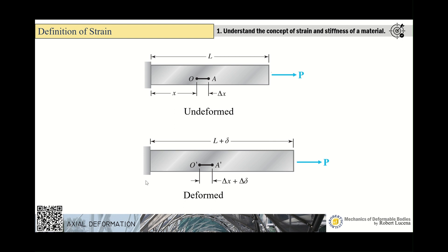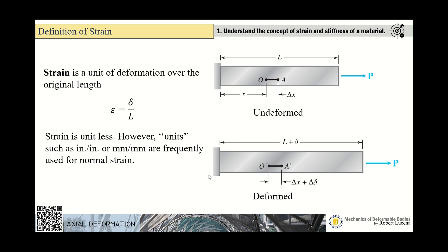When talking about the total length of the object, the total deformation is different from the segment deformation. For the differential segment OA, there is also a differential displacement. Strain is the unit of deformation relative to the original length.